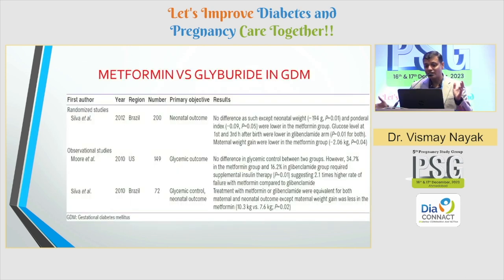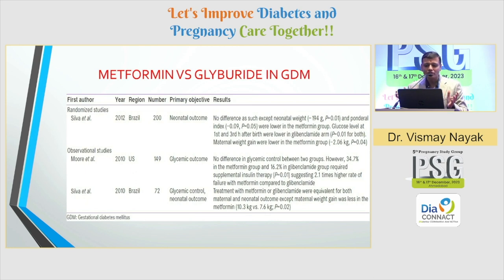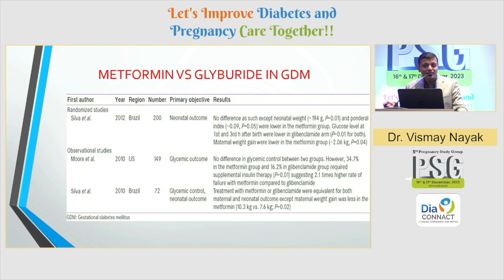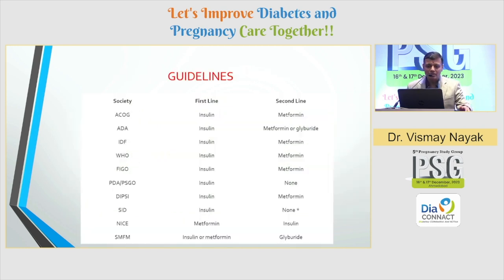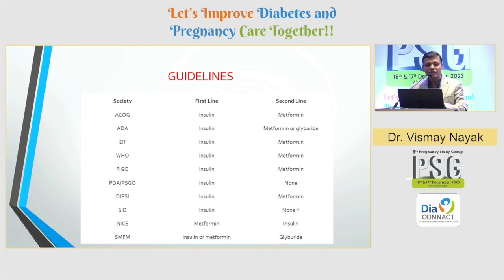What about metformin versus glyburide? The treatment targets are not met with metformin — there is an almost 2.1 times higher failure rate with metformin compared to glibenclamide — but maternal weight gain and neonatal hypoglycemia are less in the metformin group. As for guidelines, the majority suggest insulin as first-line therapy. It is only the NICE guidelines which suggest metformin as first-line and insulin as second-line therapy.